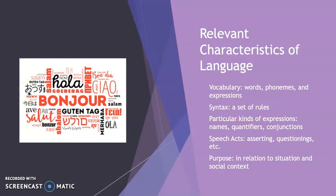Relevant characteristics of language: obviously language has vocabulary, which includes words, phonemes, and other expressions. It has syntax — a set of rules by which we put words together. There are particular kinds of expressions available in the language: names, quantifiers, conjunctions. There are speech acts — asserting, questioning, etc. And then there's the purpose of the language, so you use words in relation to a situation in a social context.